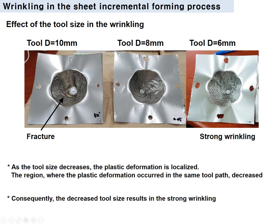We conducted the incremental forming process with different tool sizes. As the tool size decreases, the plastic deformation is localized, and the region where plastic deformation occurs along the same tool path decreases. Consequently, the decreased contact area results in strong wrinkling. Conversely, the increased tool size results in fracture of the material. In this experiment, the tool with a diameter of 8 mm was found to be appropriate.